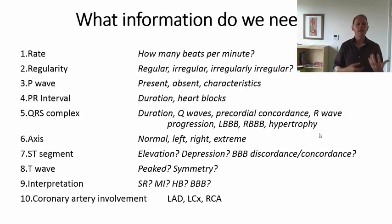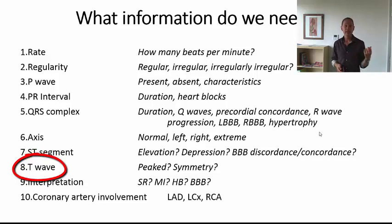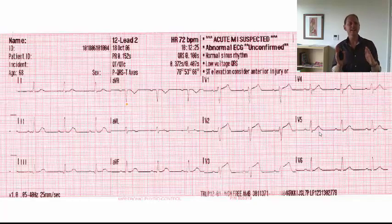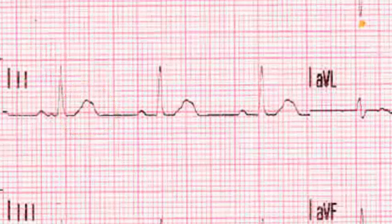What about bundle branch blocks? What about discordance and concordance? Now let's look at the T wave. A normal T wave should be slightly asymmetrical, slightly skewed off to one side. Is the T wave super peaky — really high and really peaked? If it is, that can be a sign of an electrolyte imbalance such as hyperkalemia.